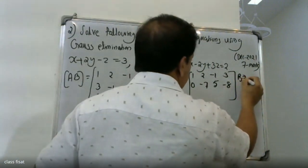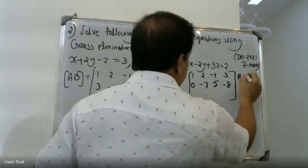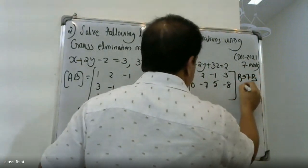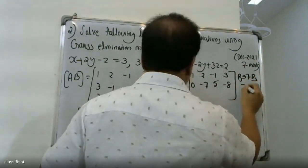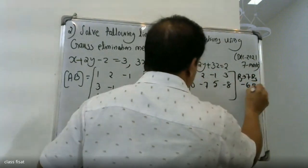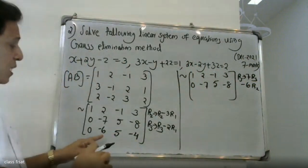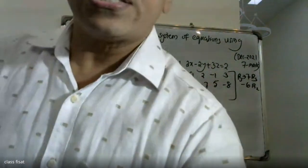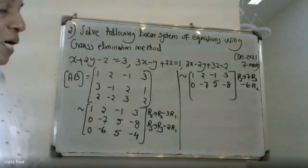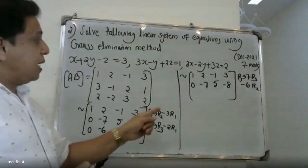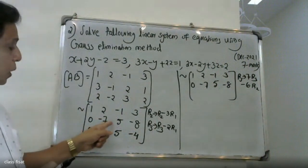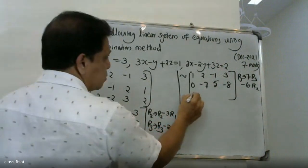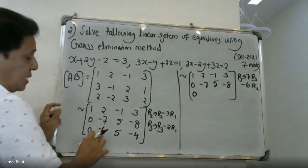R3 transforms to R3 minus 6 times R2, multiplied appropriately. The third row operation involves subtracting a multiple of the second row from the third row to eliminate the leading term.